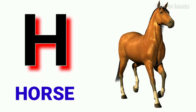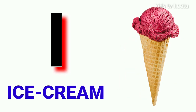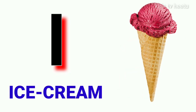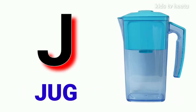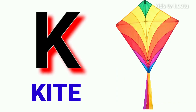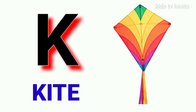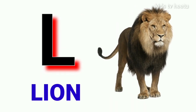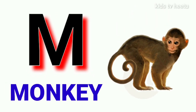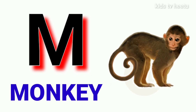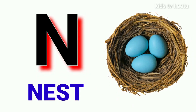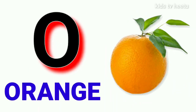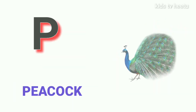H for horse, I for ice cream, J for jug, K for kite, L for lion, M for monkey, N for nest, O for orange.